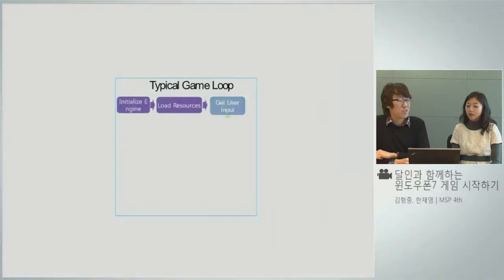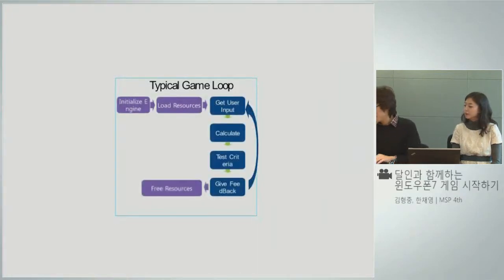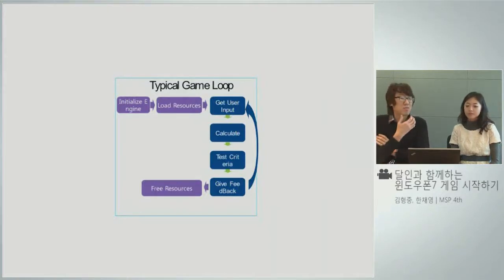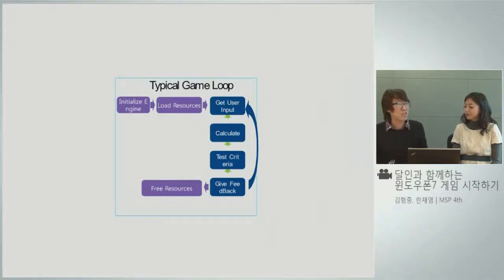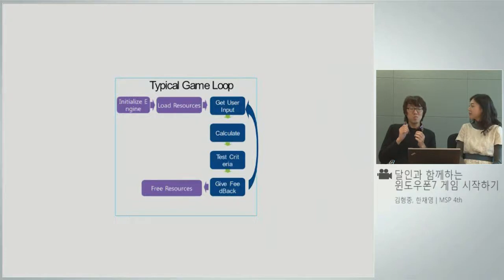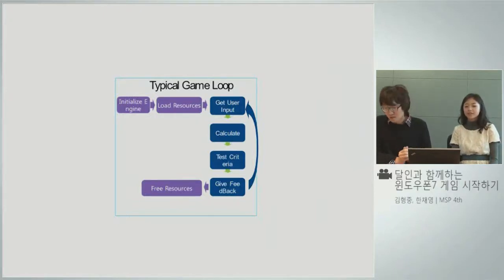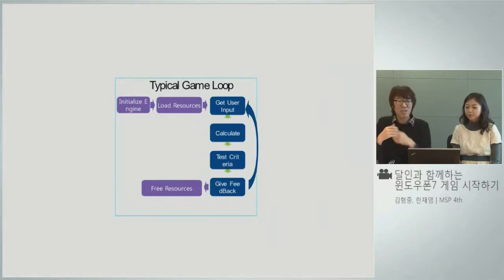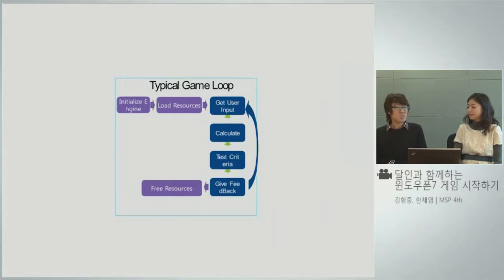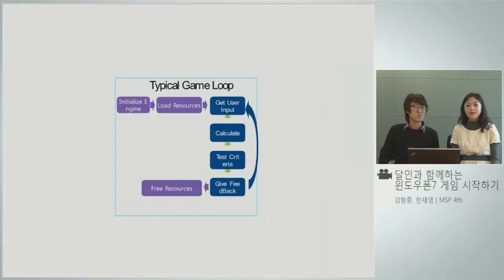일반적으로 게임이 개발되는 과정을 보시면, 처음에 윈도우를 만들고 다이렉트를 초기화시켜야 돼요. 다이렉트화 하는 거는 게임이 돌아가는 엔진을 말합니다. 그 다음에 게임 리소스, 텍스트나 이미지를 로딩하고, 키보드 마우스 입력을 받고, 로직이 업데이트된 다음 화면을 그려서 이 과정을 반복합니다. 게임 종료 시 리소스를 해제하고 종료하는 프로세스입니다.